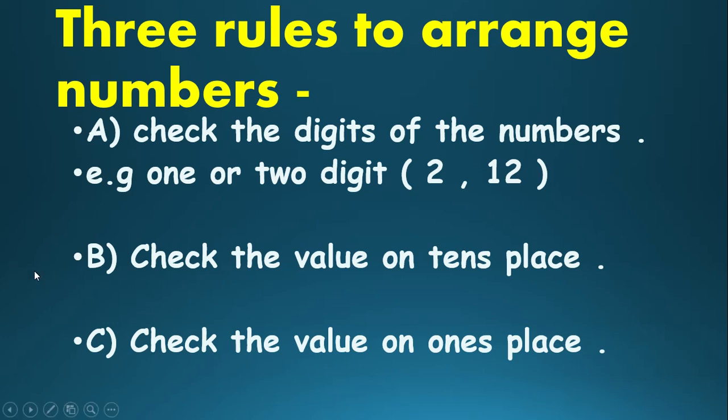The second rule is: you have to check the value on the tens place. Suppose the number is 12 — the value on the tens place is 1, meaning one ten. The third rule to arrange the numbers is: check the value on the ones place.